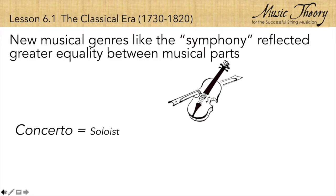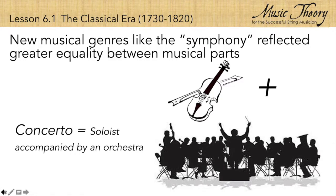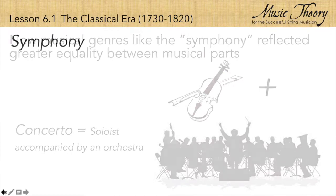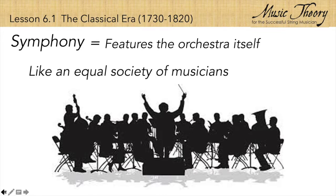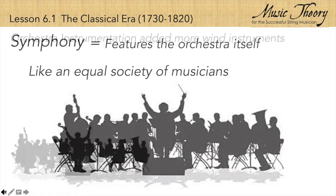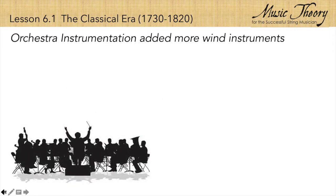Different from the Baroque Concerto, in which a soloist is accompanied by a playing orchestra, a symphony features the orchestra itself, with sections of instruments sharing important roles like a more equal society of musicians. Orchestras increased in size as well during the classical era.